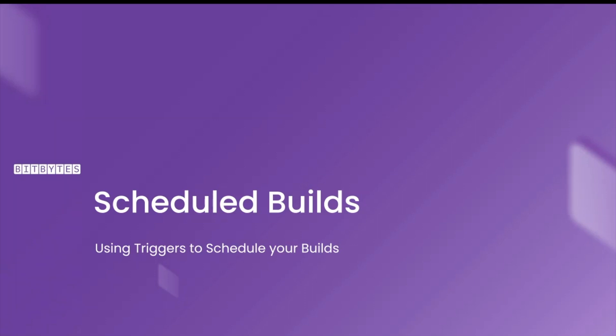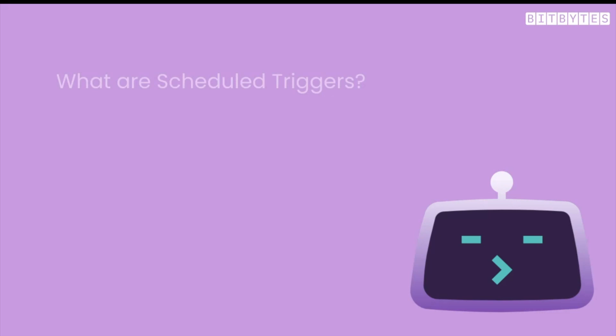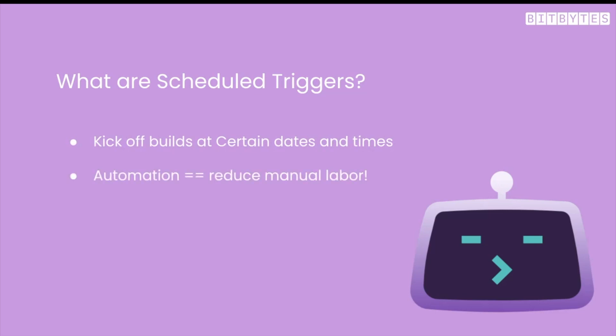Scheduled triggers are triggered at a specific time or date. This is useful if you want to automate your workflow and have it run at a certain time.